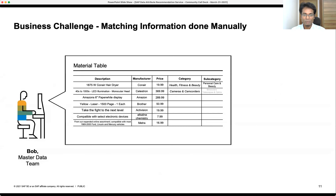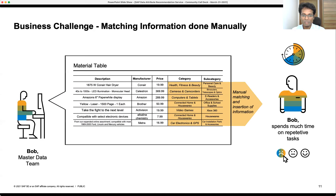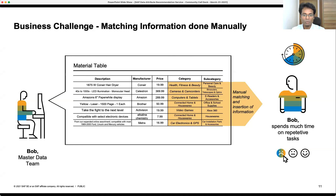Let's look at a business challenge. For example, Bob is a user in a master data team trying to create material master records. He has descriptions, manufacturer details, and price, but he doesn't have the category and subcategory. He gets this information in a simple Excel and tries to manually enter everything. The hard part is Bob needs to spend a lot of time thinking about what category an item — for example, LED illumination — should go under. Only a person with business expertise can do this correctly, making it a very manual process.